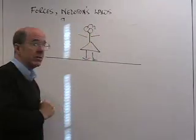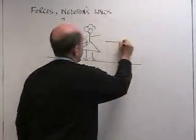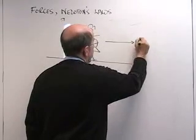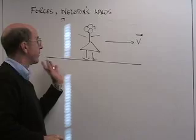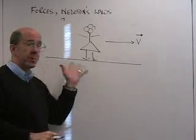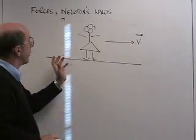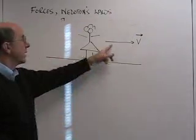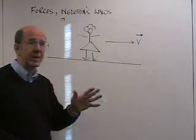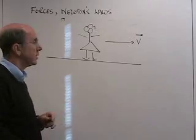So here's a skater, she's gliding across the ice at some velocity v. Now suppose we observe this to happen, there's a skater, she's gliding gracefully across the ice at a constant velocity, she's going at the same speed and in a straight line.